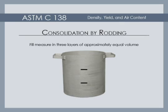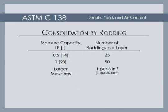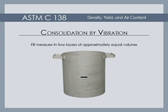When consolidation is by rodding, the measure is filled in three layers of approximately equal volume. The number of times a layer is rodded will depend on the capacity of the measure. When consolidation is by vibration, fill the measure in two layers.